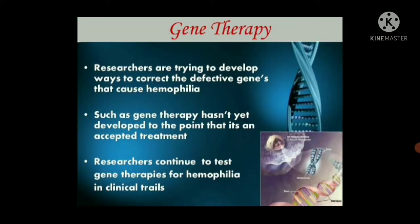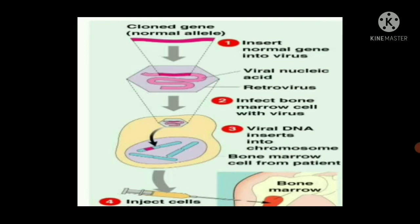Gene therapy: Researchers are trying to develop ways to correct the defective genes through gene therapy. It hasn't yet been accepted as a standard treatment, but researchers continue to test gene therapies for hemophilia in clinical trials. The process involves creating a clone of the normal gene, removing the defective portion, inserting normal genes into a viral vector, infecting bone marrow cells with the virus so that viral DNA inserts into the chromosome of the bone marrow cell, and then reinjecting those cells.